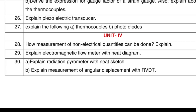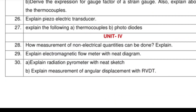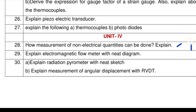Coming to Unit 5: measurement of non-electrical quantities. How can non-electrical quantities be measured? You can take any one example — for instance, the electromagnetic flow meter, where flow is a non-electrical quantity measured using electromagnetic principles. Temperature can be measured using a thermocouple. Electromagnetic flow meter is one of the important topics in Unit 5.